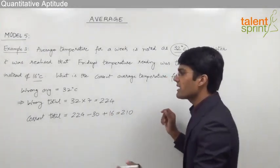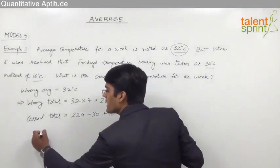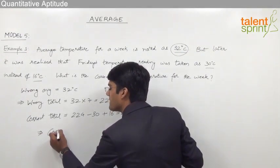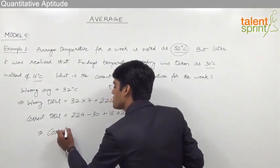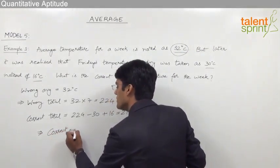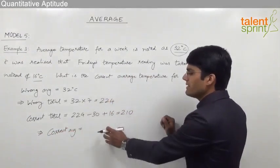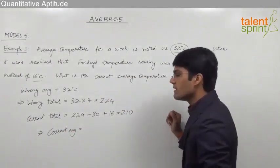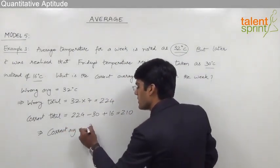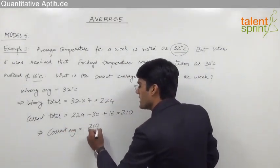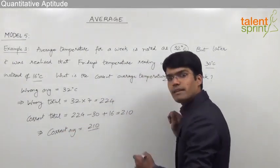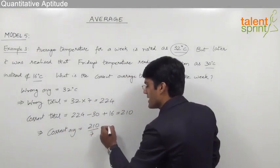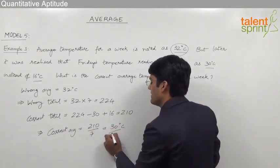From this correct total, the correct average equals the correct total divided by the number of elements. So 210 divided by 7 gives 30 degrees centigrade.